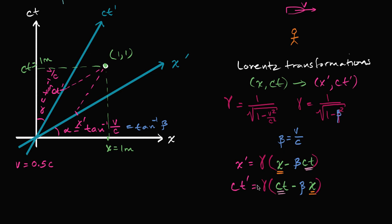First let's figure out what the Lorentz factor is — actually, let's first figure out what beta would be, that'll simplify everything. Beta in this case is going to be equal to 0.5c divided by c, so that's just going to be equal to 0.5. You could view beta as what fraction of the speed of light that person is traveling in my frame of reference.